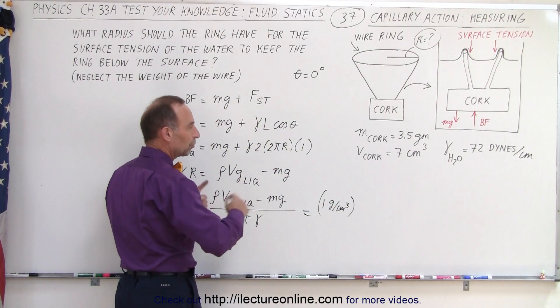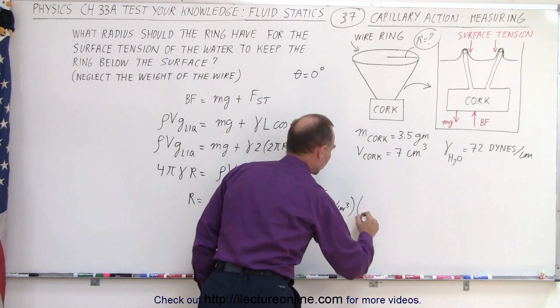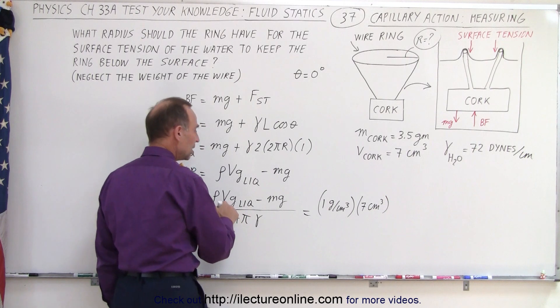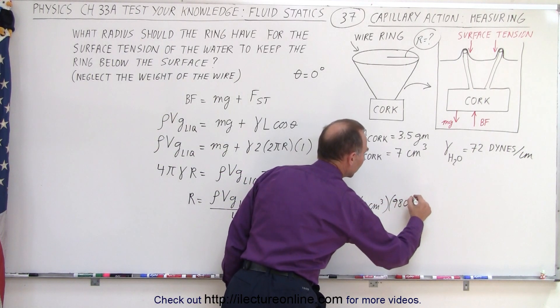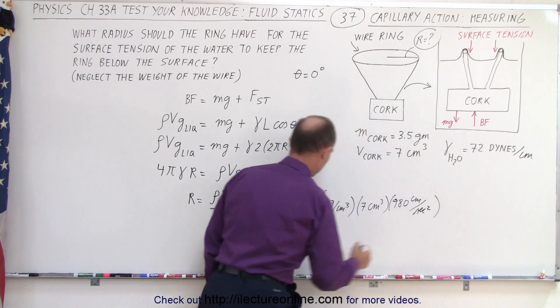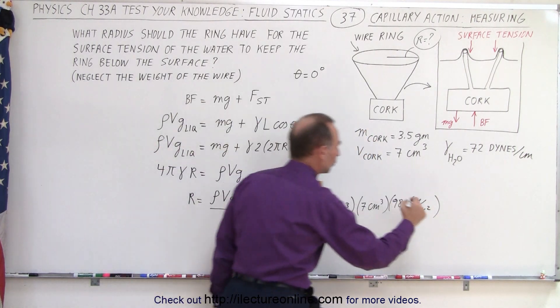Density of the liquid: one gram per cubic centimeter. The volume of the displaced liquid is the same as the volume of the cork: seven cubic centimeters. And then g in cgs units, which is 980 centimeters per second squared.